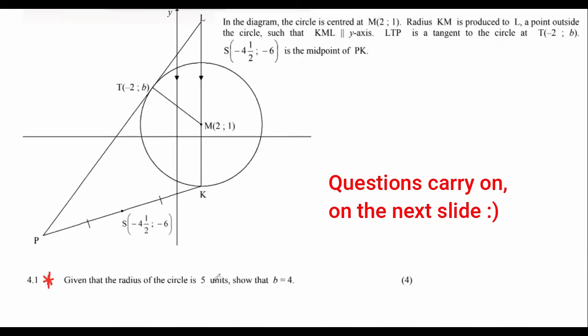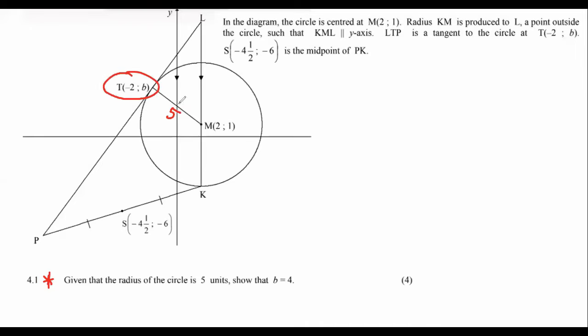Given that the radius of the circle is 5, show that b equals 4. I would use the distance formula between these two points, and I know that should be equal to 5.